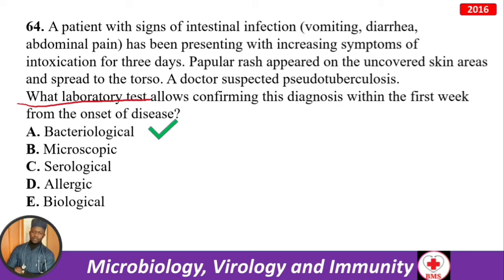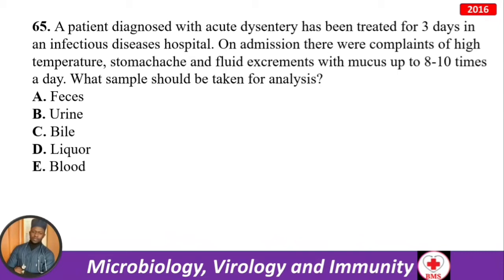A patient with acute dysentery treated for three days: high temperature, stomach ache, fluid stools with mucus up to 8-10 times daily. This is shigella. Shigella is always pathogenic — if found in stools, it's diagnostic. Answer: feces. After 9-10 days, you can also check blood serum for antibodies.